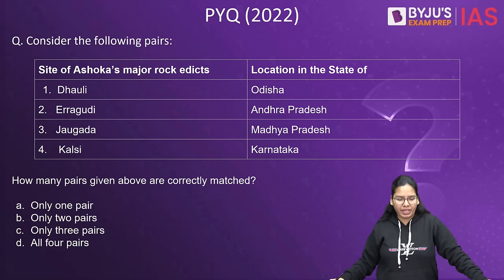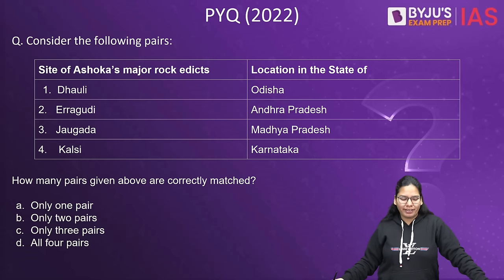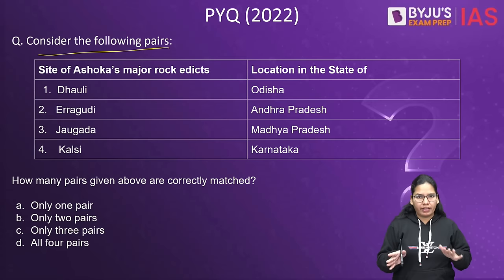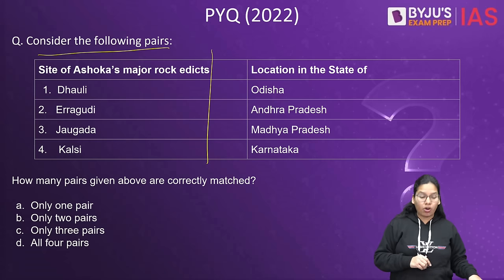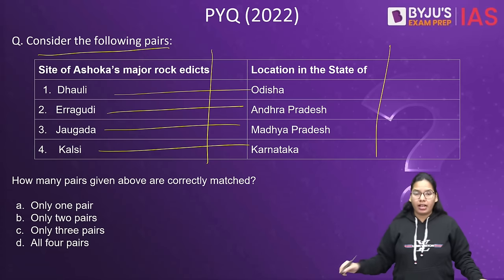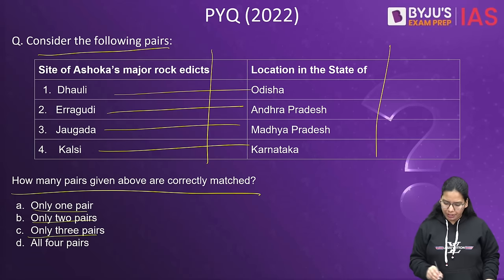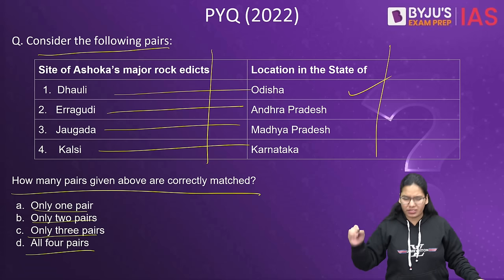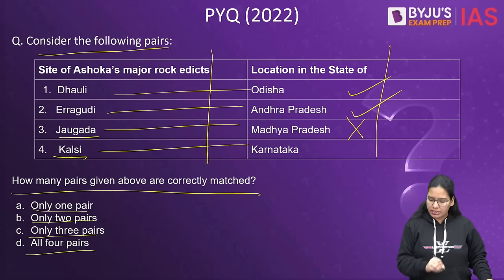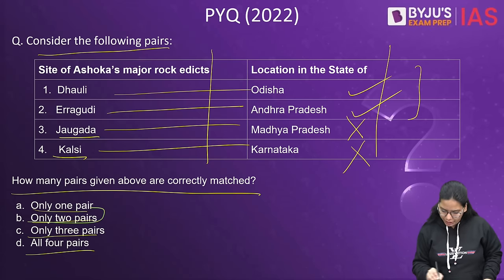Now PYQ of today's — a previous year question from the 2022 question paper. Consider the following pairs. In the first column we have sites of Ashoka's major rock edicts, and in the second column modern-day states. Dhauli — Odisha; Erragudi — Andhra Pradesh; Jaugada — Madhya Pradesh; Kalsi — Karnataka. How many pairs are correctly matched — only one, only two, only three, or all four? Dhauli is in Odisha — right. Erragudi is in Andhra Pradesh — right. But Jaugada mapped to Madhya Pradesh is wrong. Kalsi in Karnataka is also wrong. So only two pairs are correct — option B.